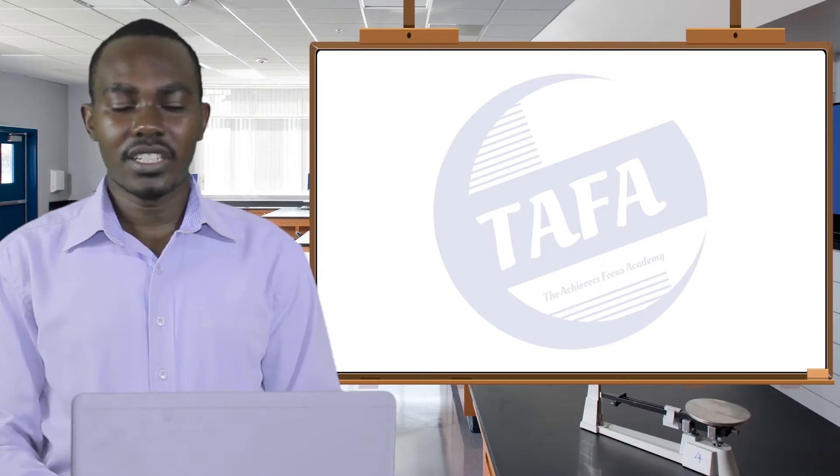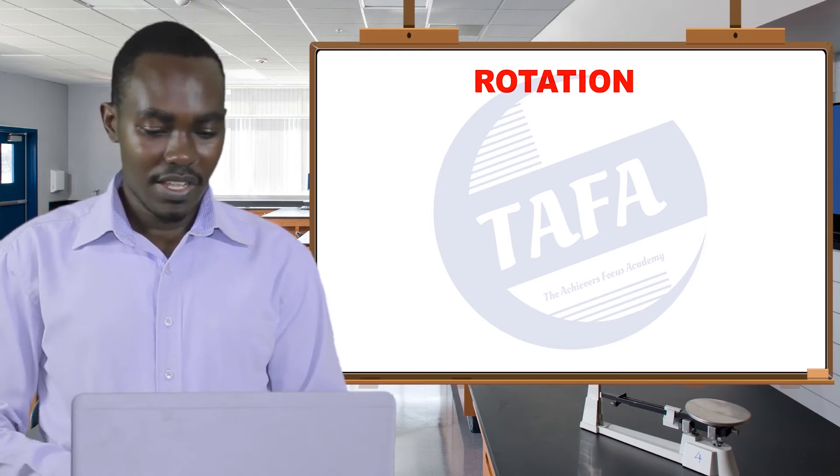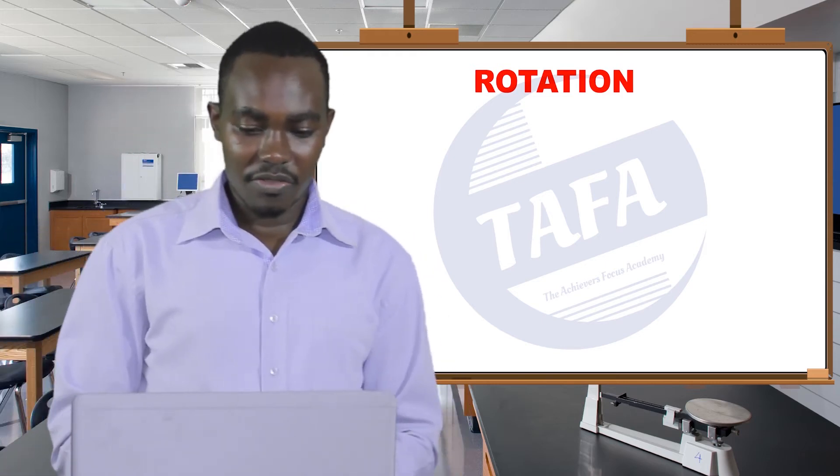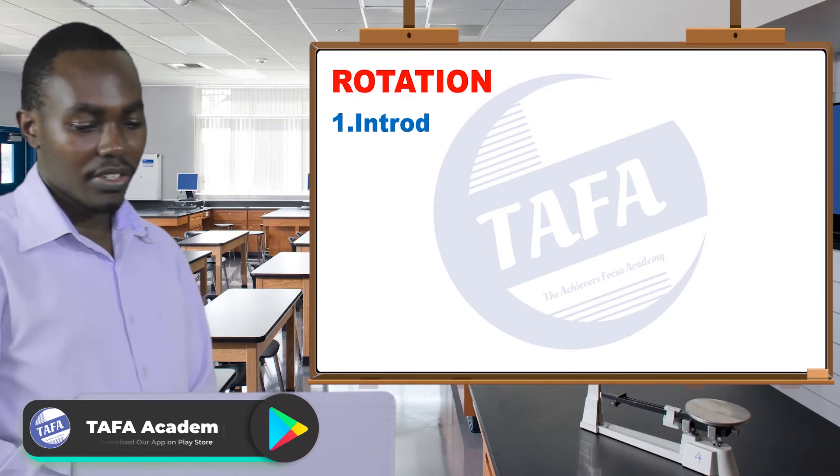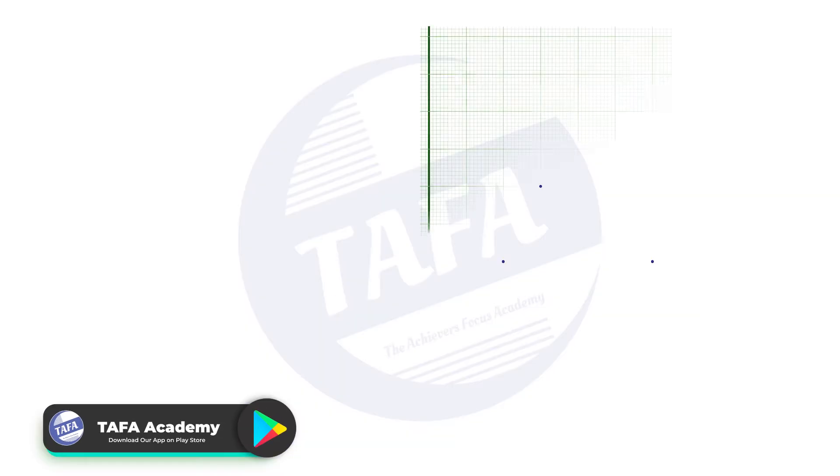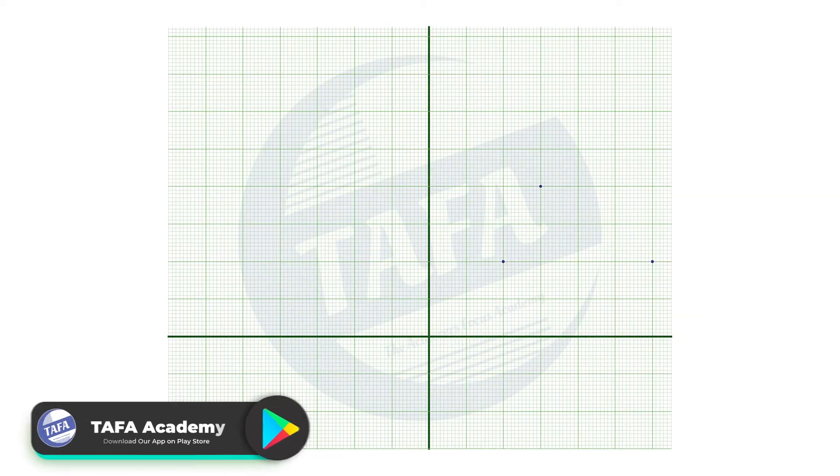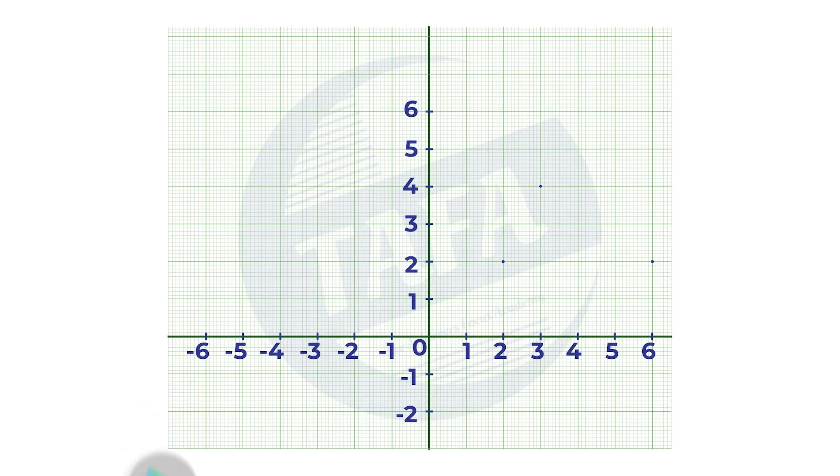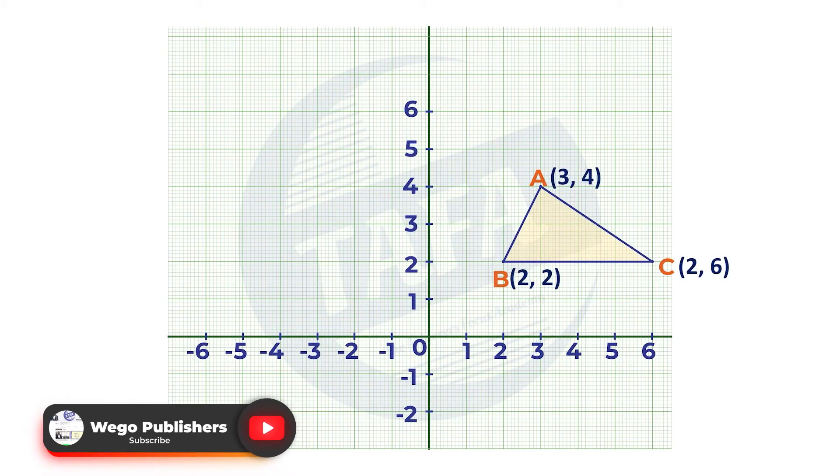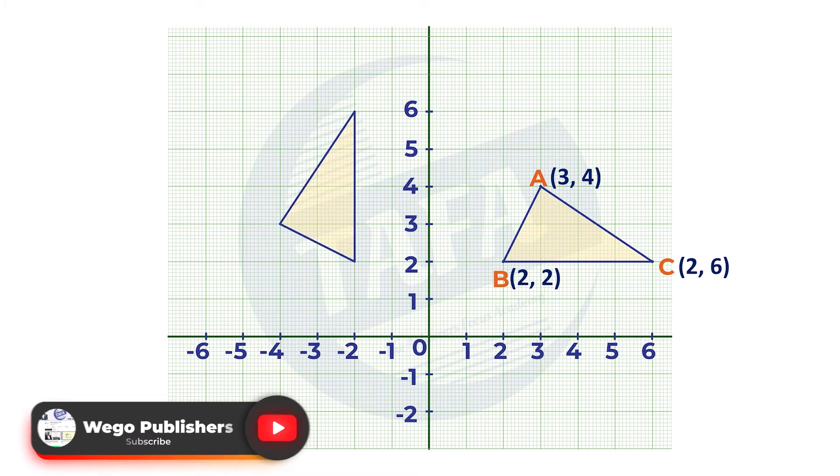A rotation from transformation topics. We begin with the introduction. You're given this diagram with two triangles: triangle ABC and another triangle ABC prime.